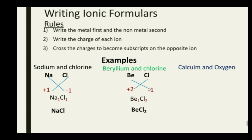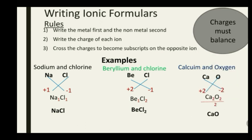Let's do a final one: calcium and oxygen. Writing the metal first and the non-metal second, calcium has a charge of +2 and oxygen has a charge of -2. Crossing them gives a compound that looks like Ca₂O₂. We can further simplify because the subscripts share a common factor — dividing by 2 gives CaO. The key trick here is that the charges must always balance.